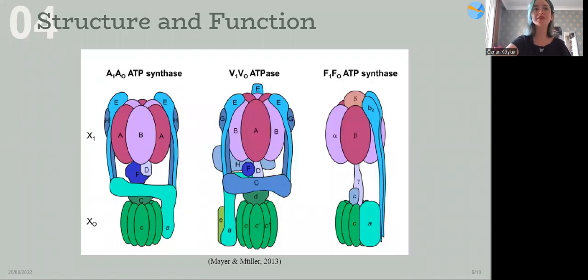First, I'm starting with the structure and how it relates to the function. If you look more closely to their structure, they share general similarities. There are two main domains and they are connected by stalks. And this is the cytoplasmic domain. ATP is synthesized here. And this part is the membrane embedded domain. It translocates ions and it generates the power needed to synthesize ATP in here.